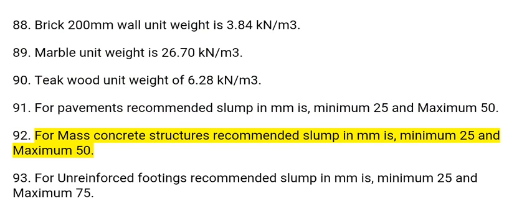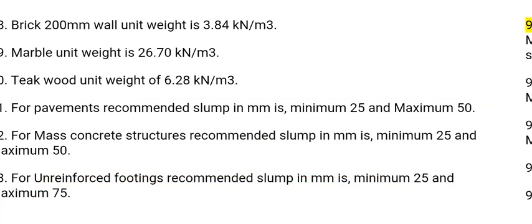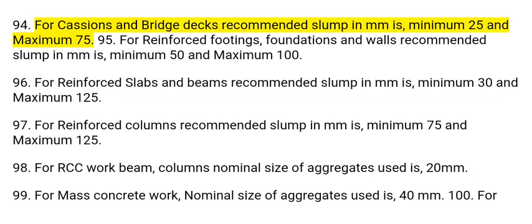92. For mass concrete structures, the recommended slump is minimum 25 mm and maximum 50 mm. 93. For unreinforced footings, the recommended slump is minimum 25 mm and maximum 75 mm. 94. For caissons and bridge decks, the recommended slump is minimum 25 mm and maximum 75 mm.